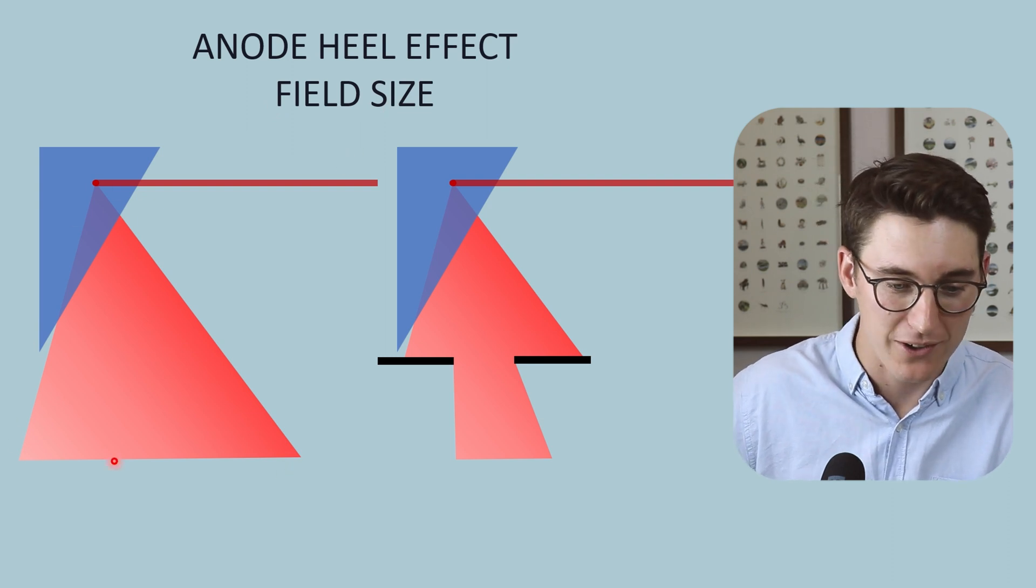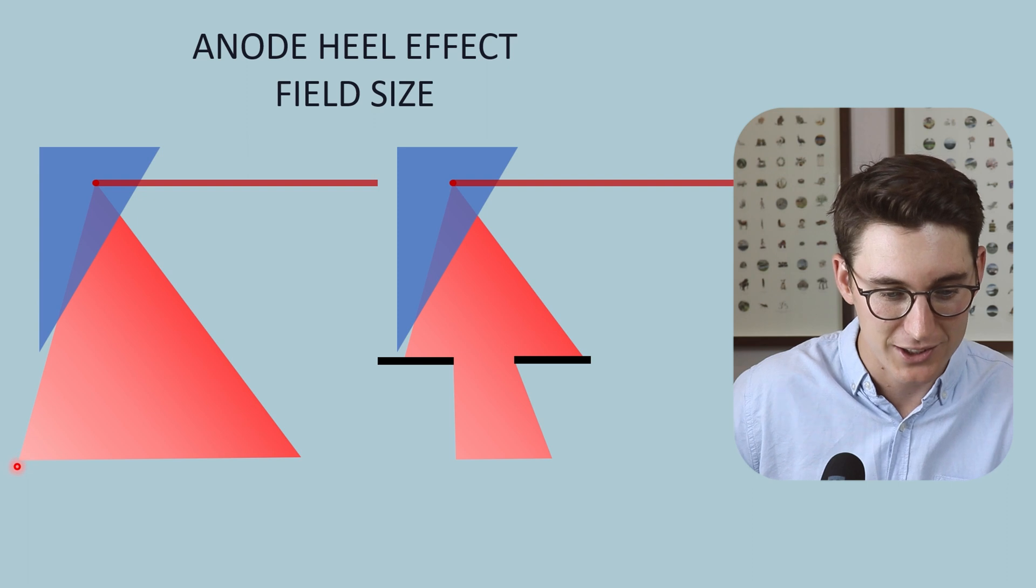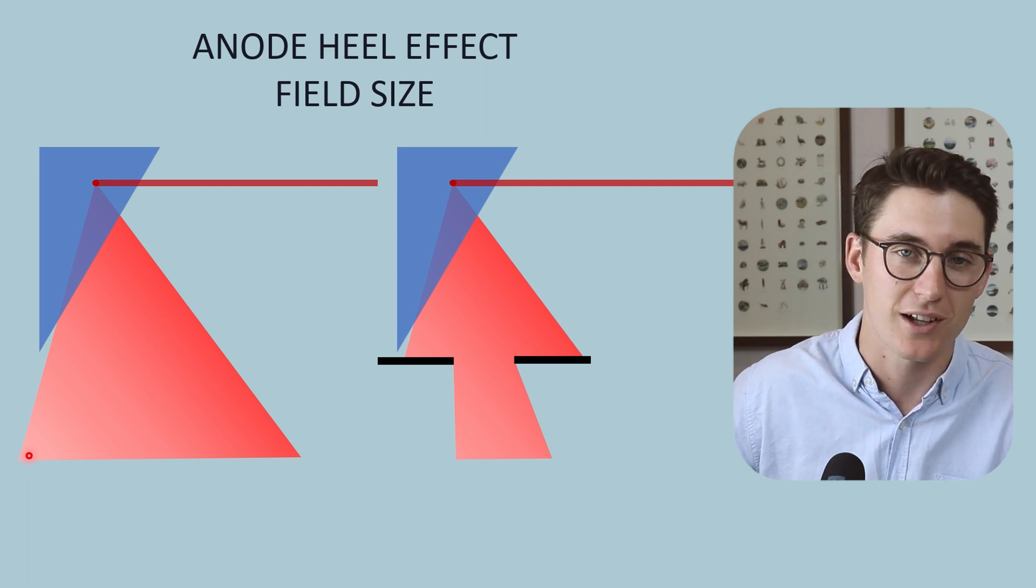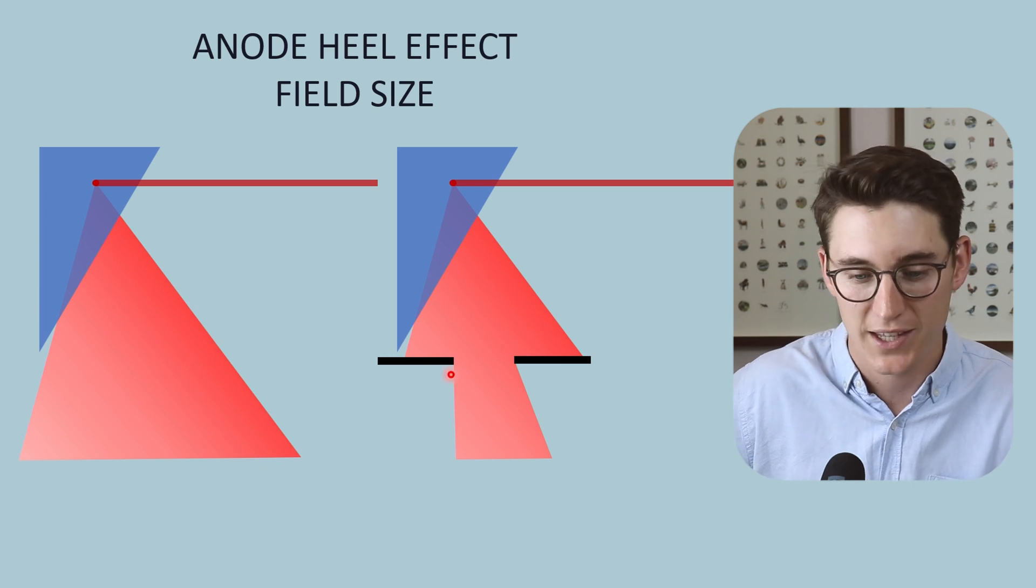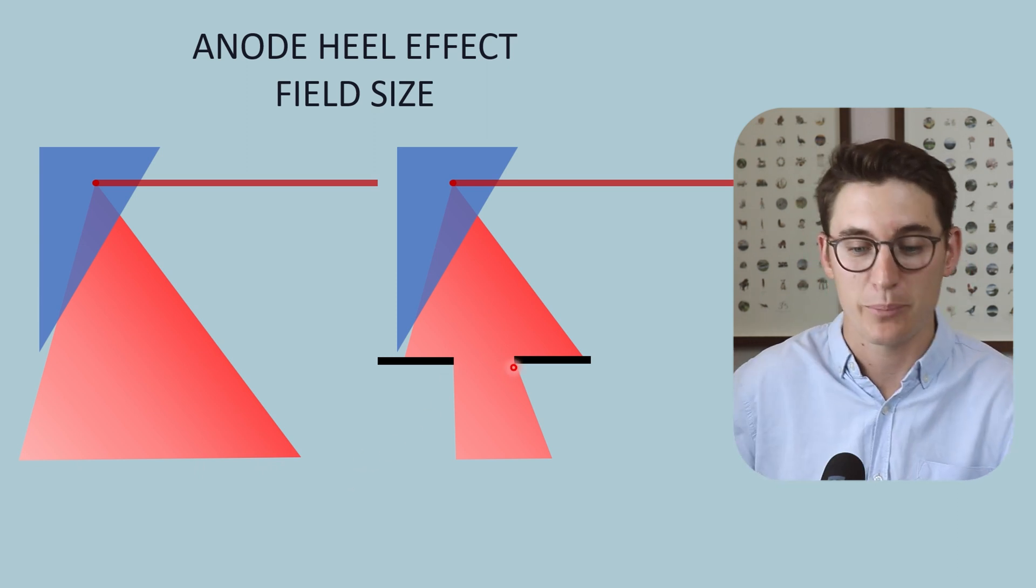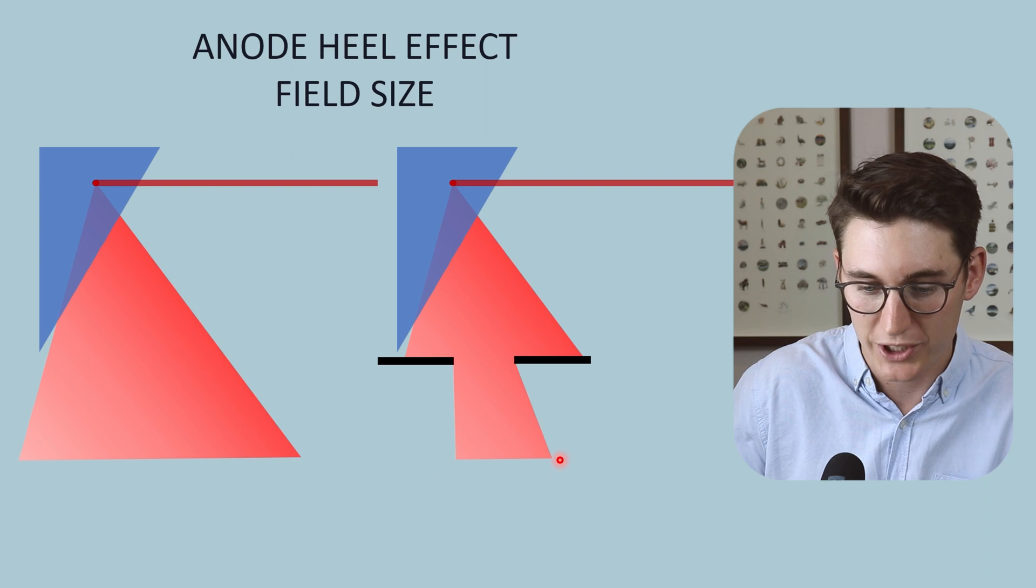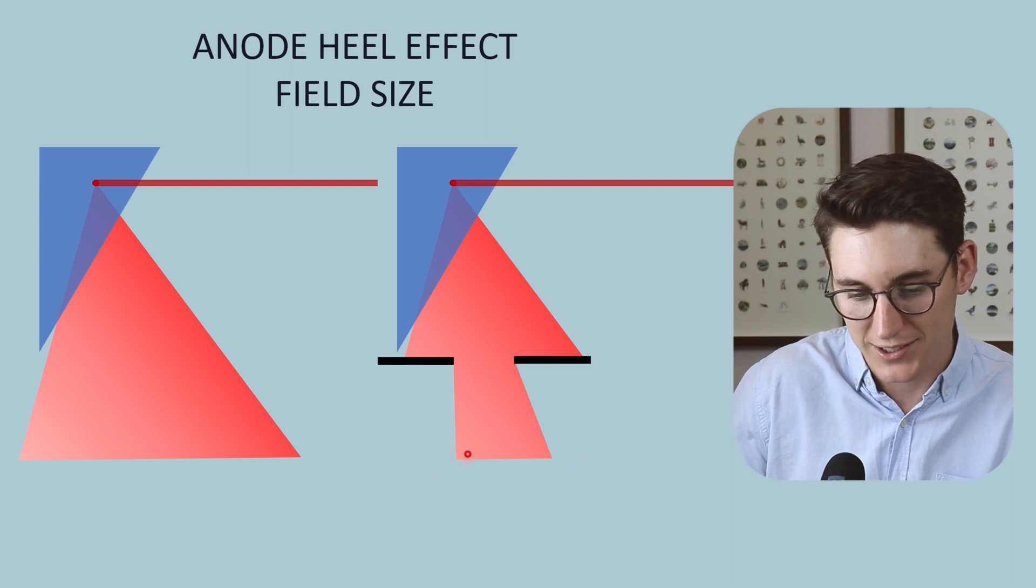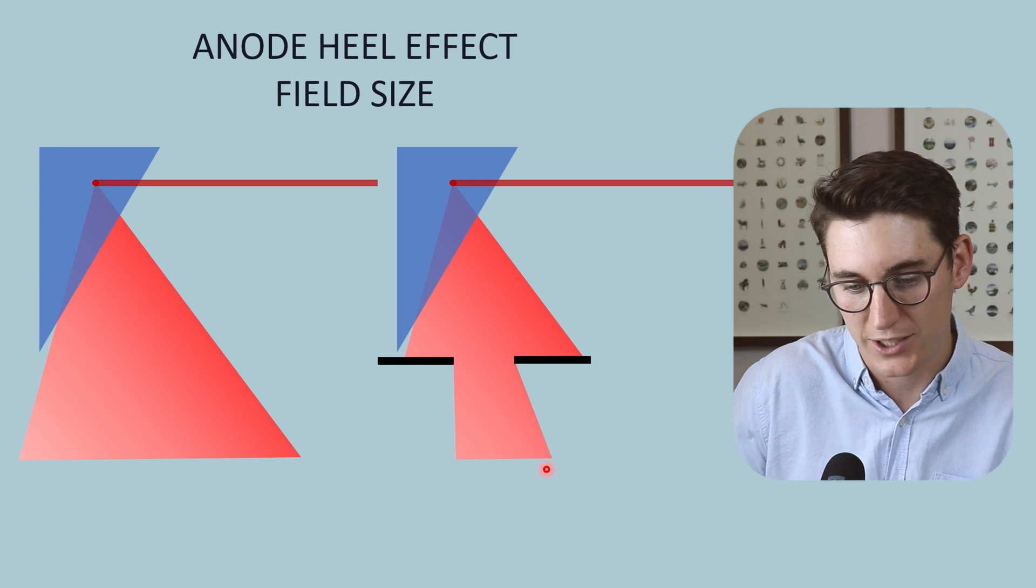If we use our entire field here to create our image, our detector will experience the entire range of intensities between our anode and cathode sides. If we collimate that beam down to a small region, that differential in intensity is much less if our detector was now detecting all of these x-ray beams.